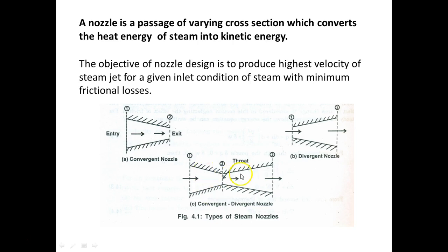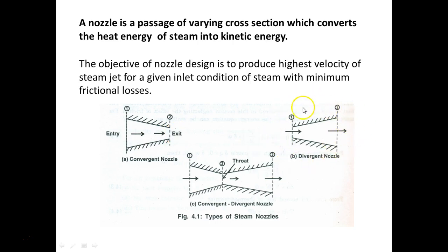In a convergent-divergent nozzle, the flow is subsonic in the converging section, sonic at the throat (V = A), and supersonic in the diverging section. A convergent nozzle is used for subsonic outlet flow, and a convergent-divergent nozzle is used for supersonic outlet flow. The purely divergent nozzle is not practically used because entry velocity in a nozzle is always subsonic — supersonic inlet is not possible in a practical nozzle.